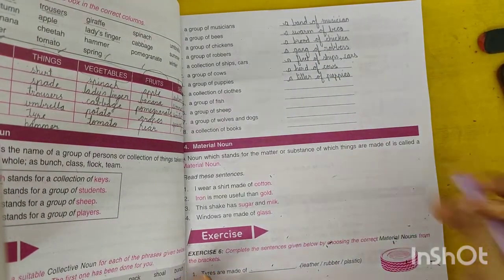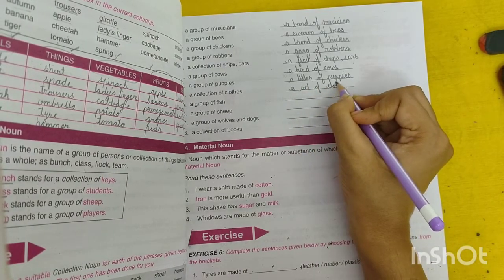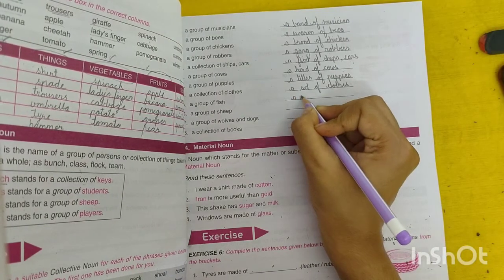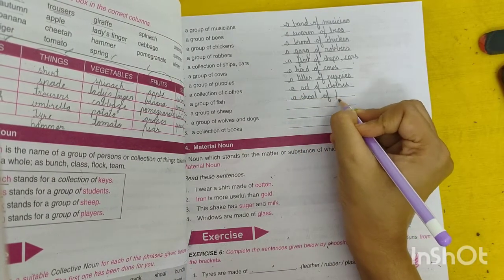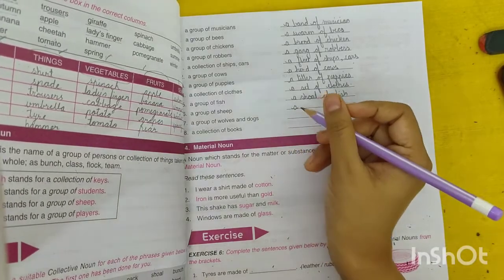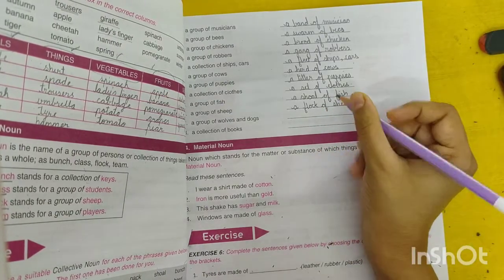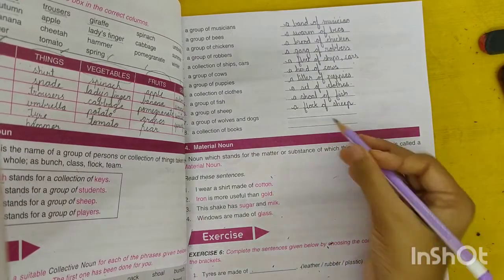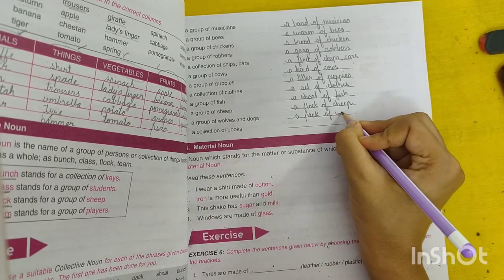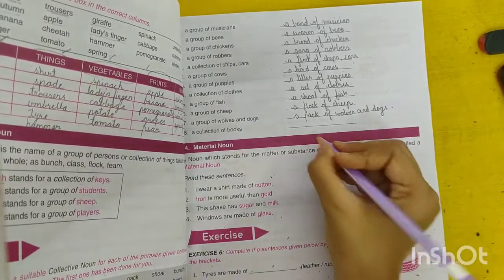A collection of clothes, a set of clothes. A group of fish is a shoal of fish. A group of sheep is a flock of sheep. A group of wolves and dogs is a pack. A collection of books is a pile of books.